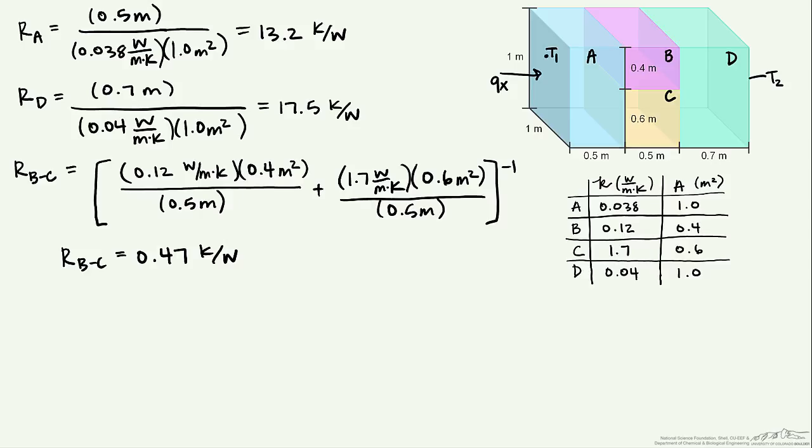If we want to calculate the heat transfer rate, that's just the difference in temperature divided by the sum of these resistances. So that's going to be 55 K divided by, now we just sum these all up, 13.2 plus 17.5 plus 0.47, and these are all in kelvin per watt. And when we calculate this,